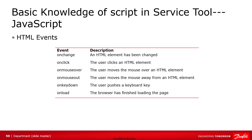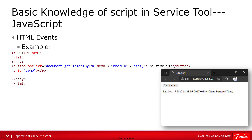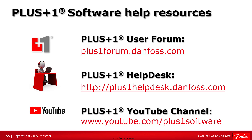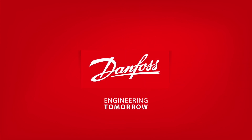HTML events are things that happen to HTML elements. When JavaScript is used in an HTML page, JavaScript can react to these events. Here is a list of some common events — we can use them to call JavaScript functions. In this example, the onClick attribute is added to the button element, calls the JavaScript code, then changes the content of the paragraph with the date value. In the next example, the onClick attribute is added to call the function displayData. This function is defined to change the content of the element with the date value. For more information on Plus One Software View, please remember to visit our forum or helpdesk. And don't forget to subscribe to our YouTube channel to see our latest videos. Thank you for listening. We'll see you soon.